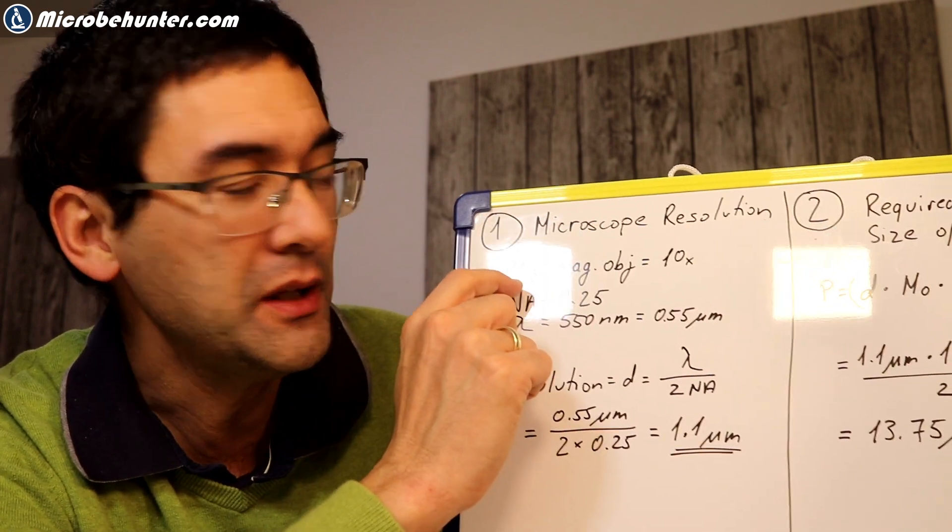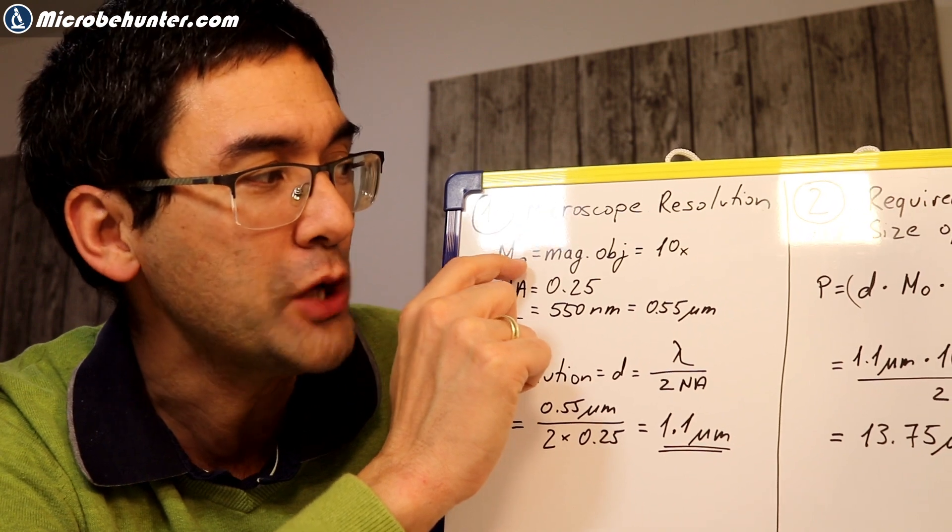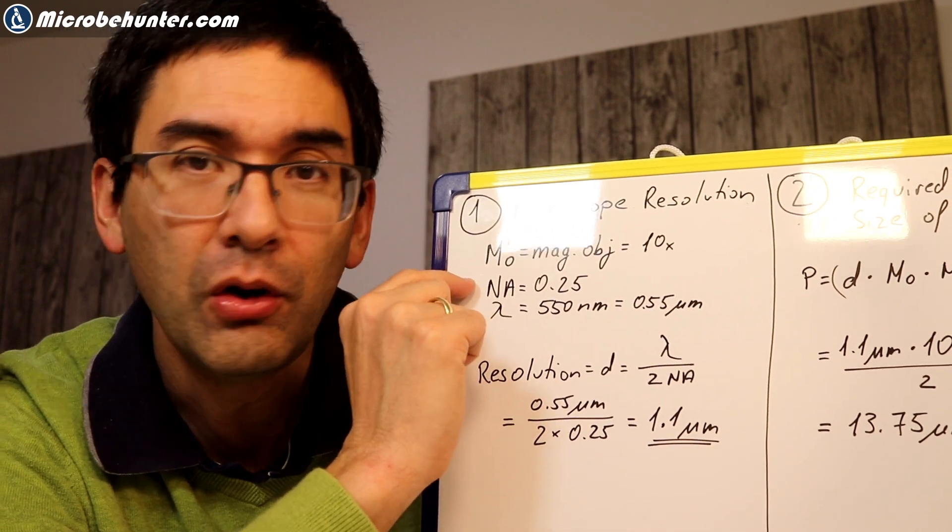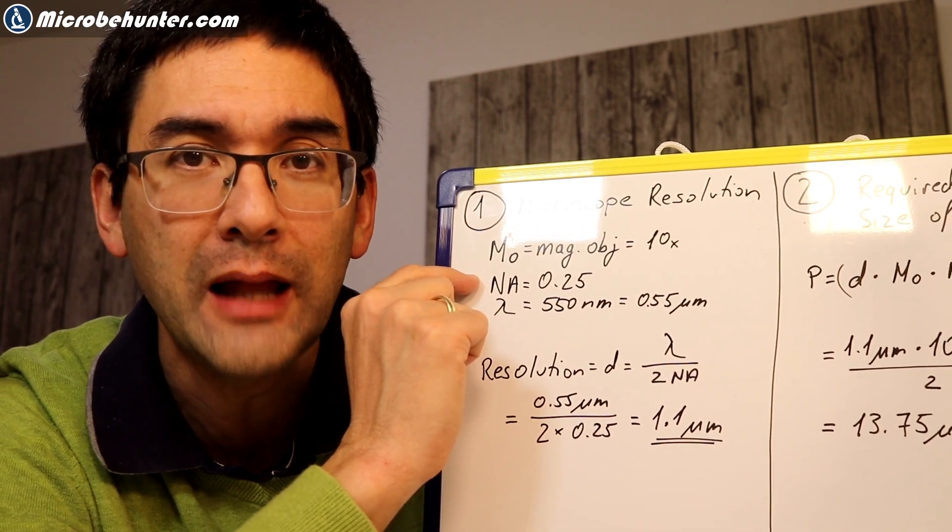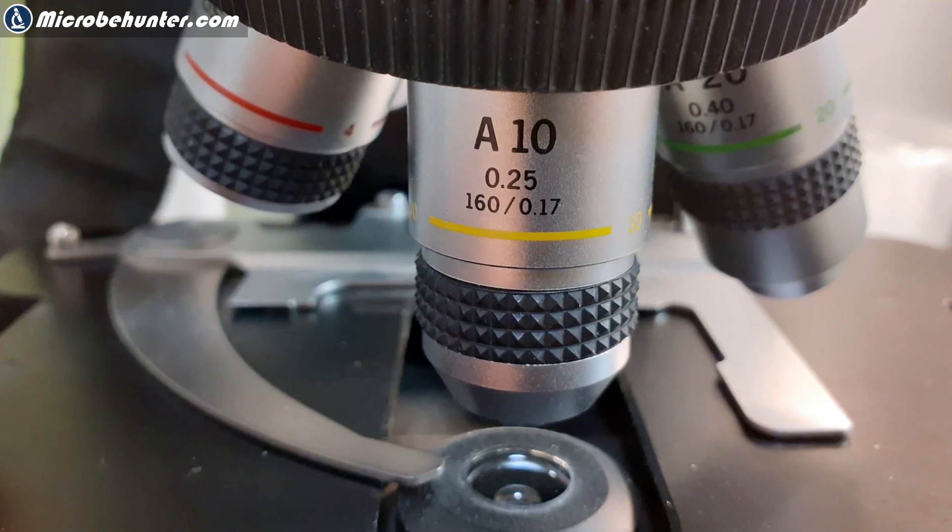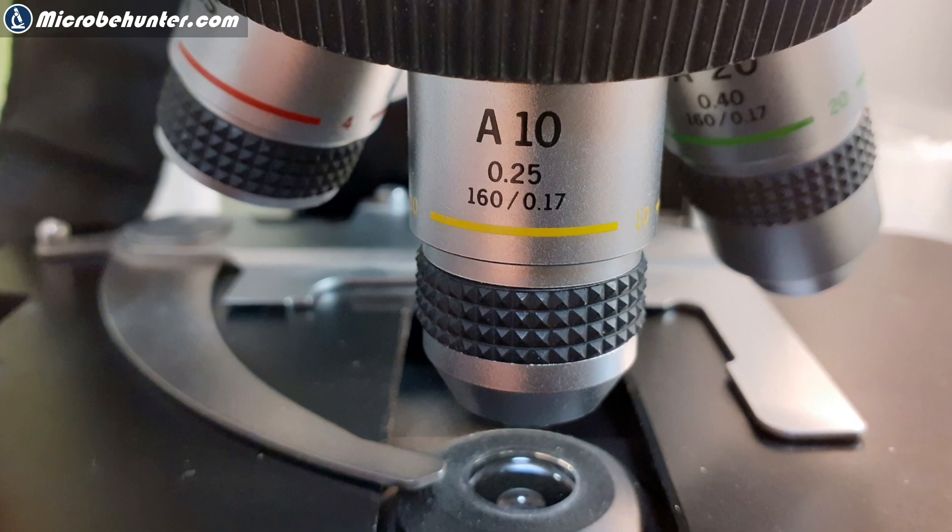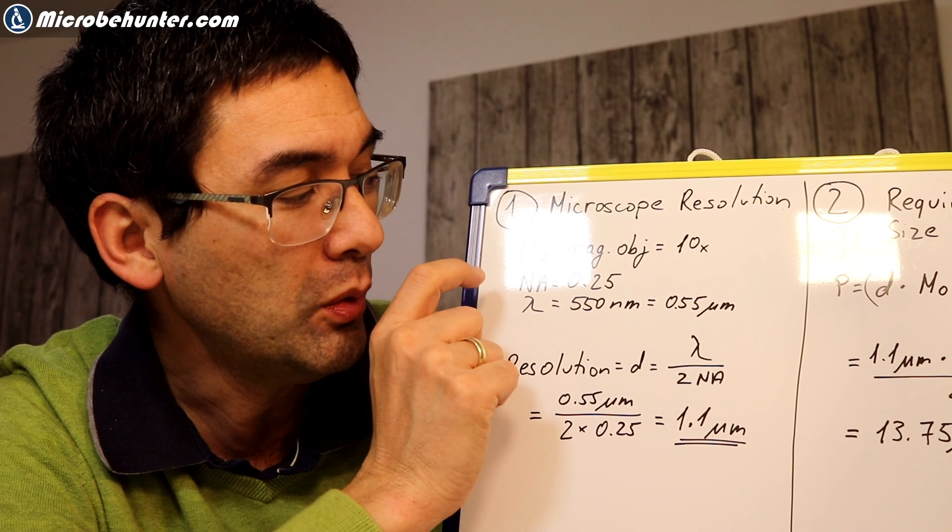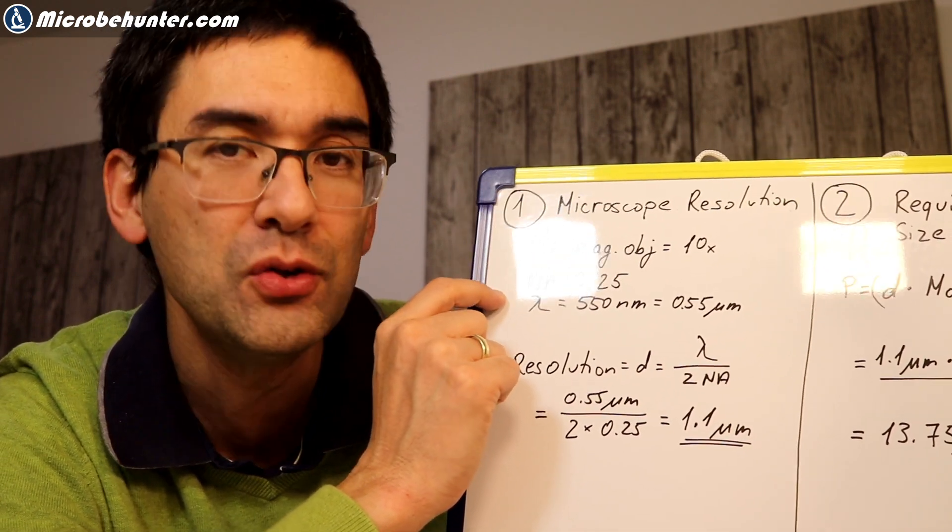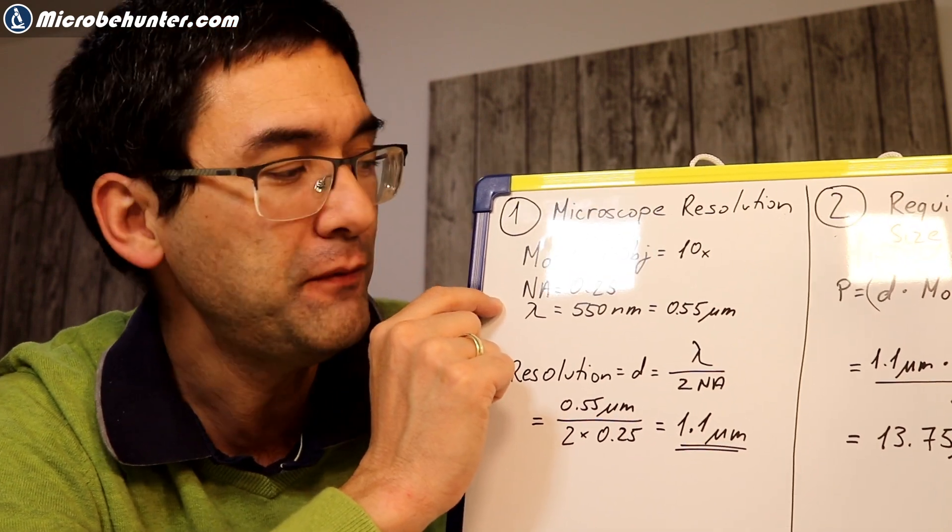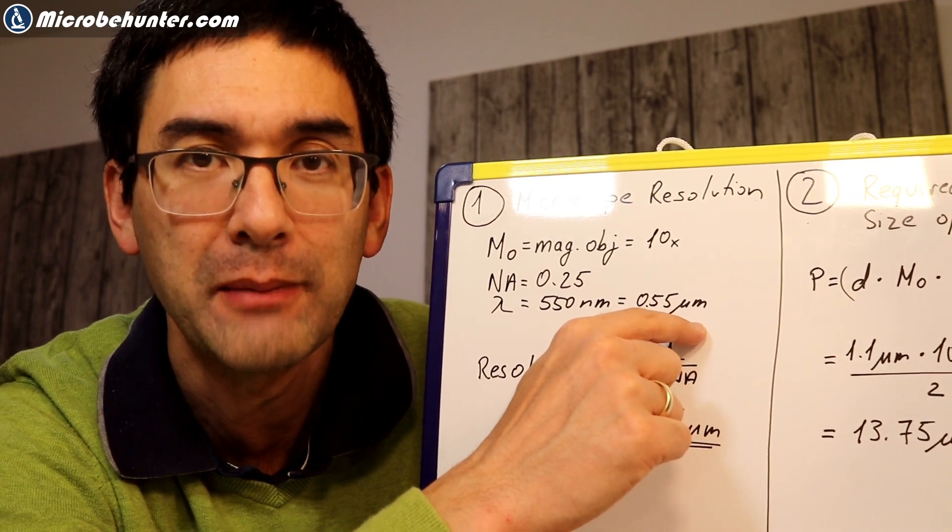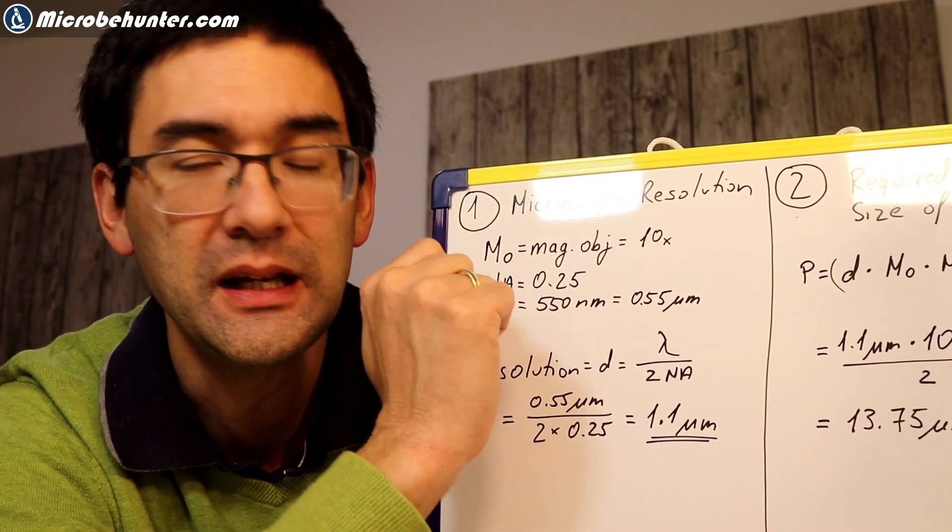So what I have is the following here. I will do the calculations for a microscope objective, which has a magnification of 10 times. It's one of my microscope objectives there. And on the microscope objective, there is a numerical aperture. And in this case, it's 0.25. You simply read it off the objective. And this one, this value is extremely important because it determines the image resolution. And something else that you need is you need the wavelength of light that you want to use. In this case, I'm using an average wavelength of, let's say, 550 nanometers. And I'm converting this to micrometers, because all of our calculations will be done in micrometers.